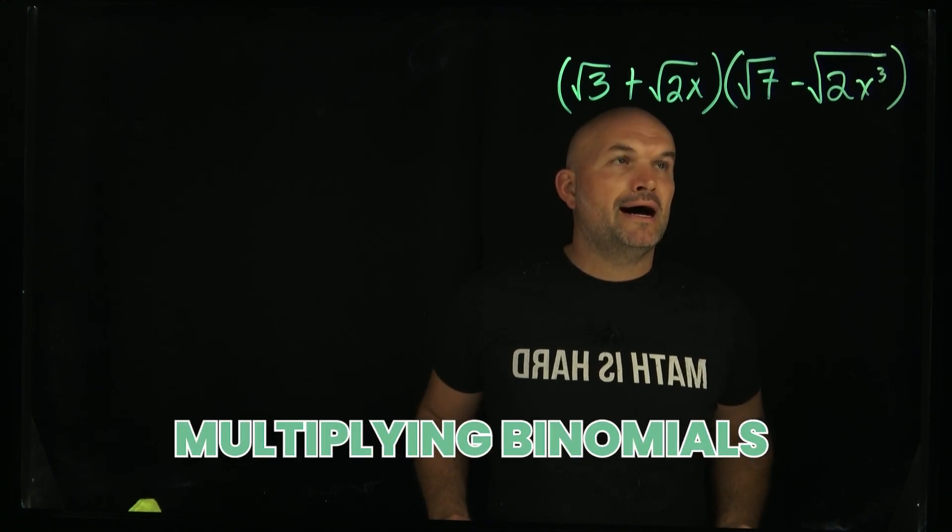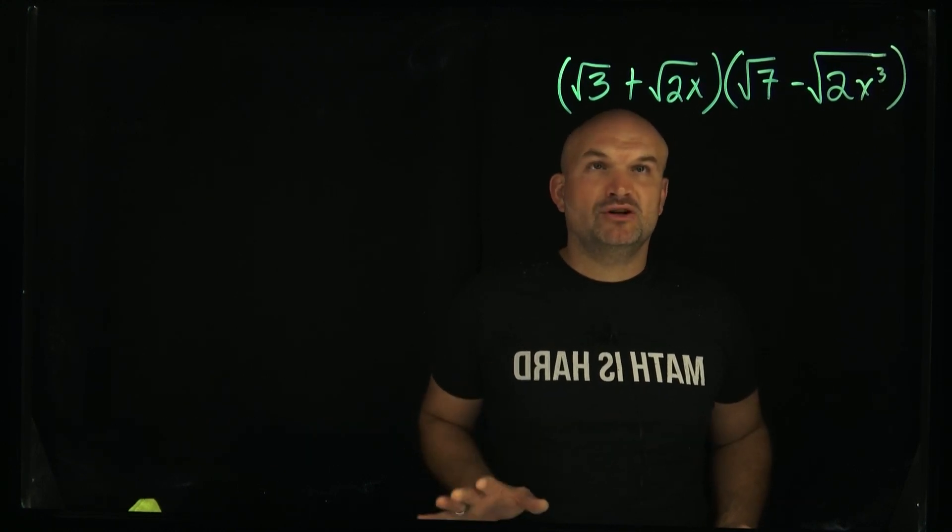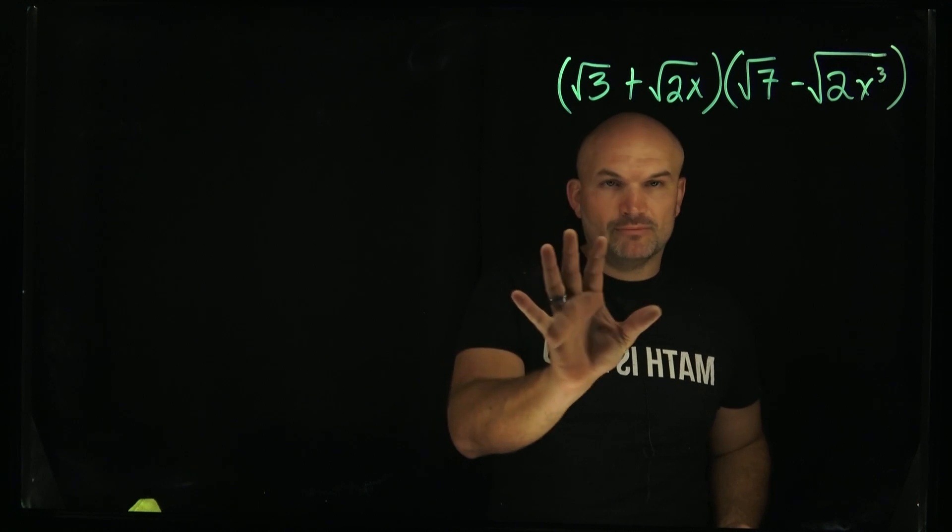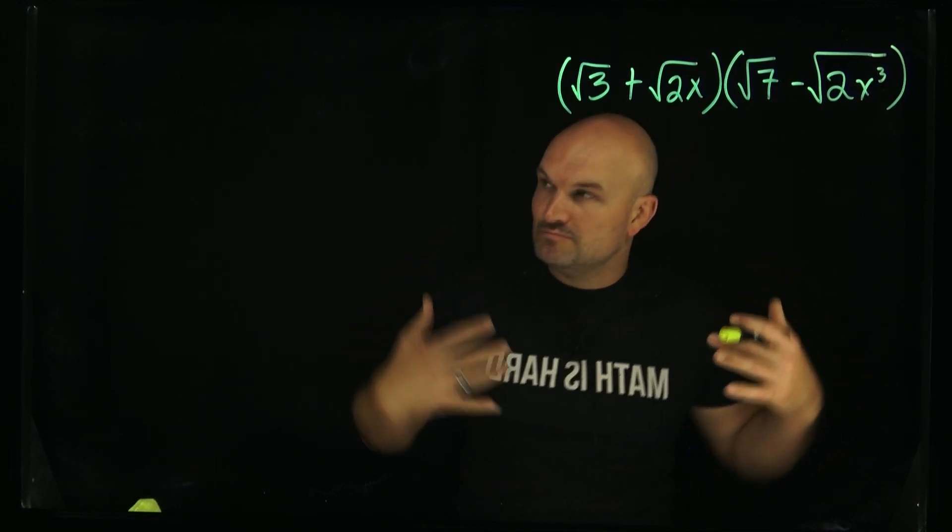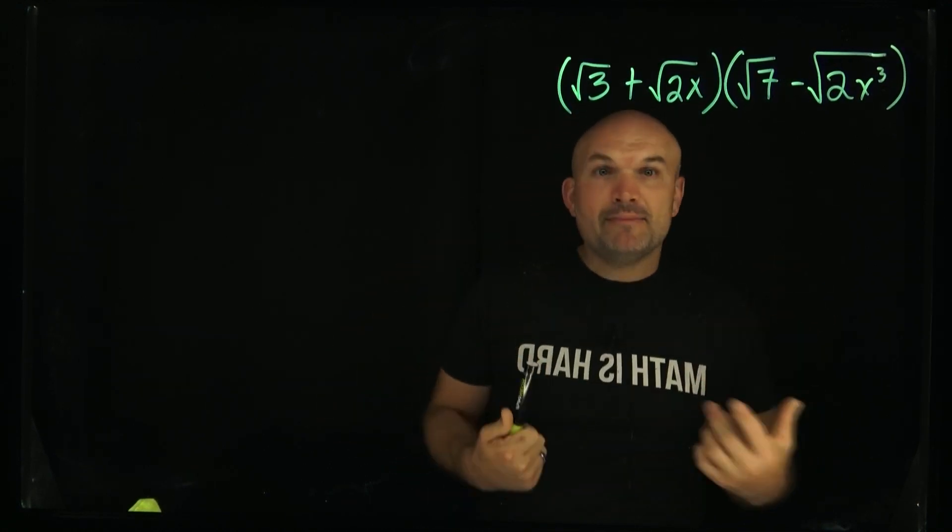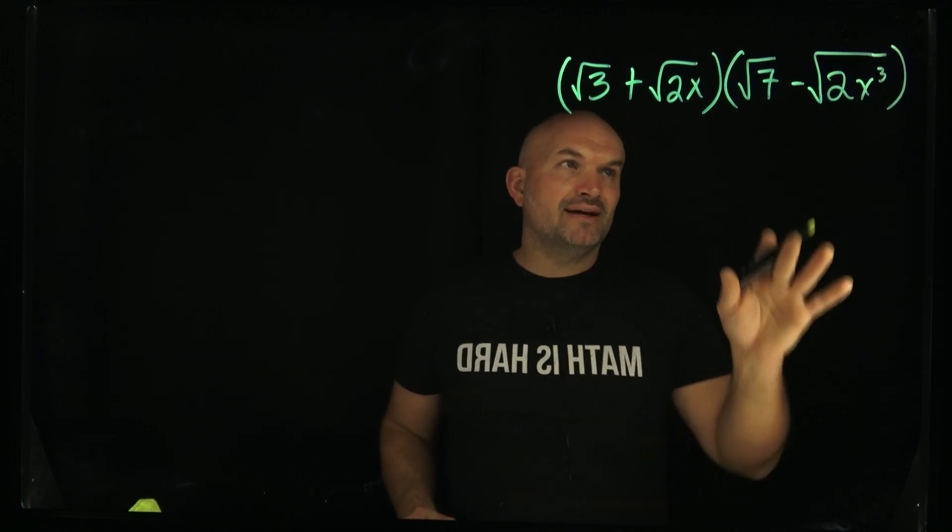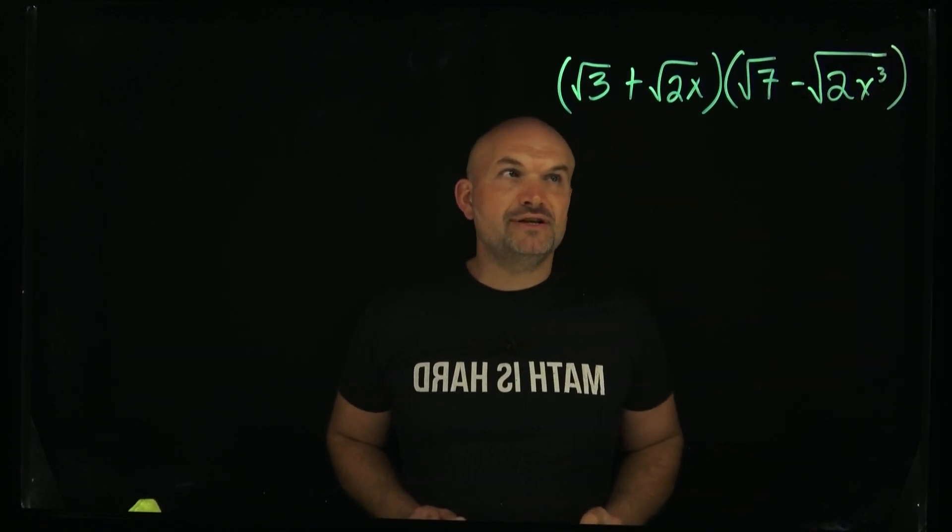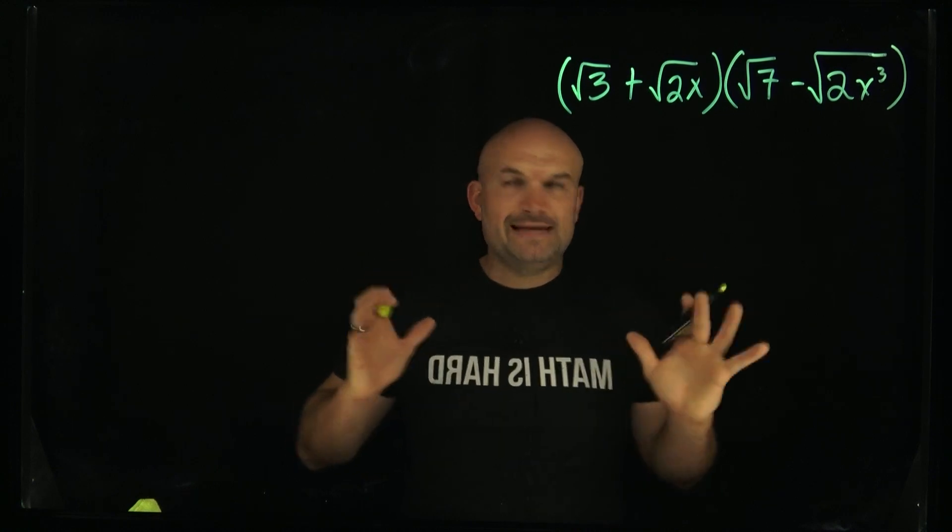One thing you need to remember when multiplying polynomials is every term needs to be multiplied by every term. When you have binomials multiplied by each other, one of the most common ways to remember how to do that is to use FOIL. For this problem, it looks a little complicated, so I actually would prefer using FOIL just to keep things organized.